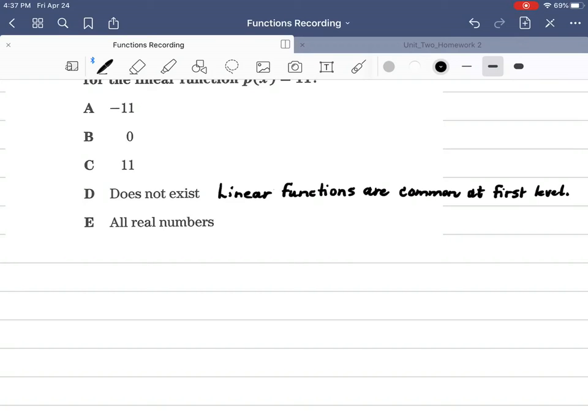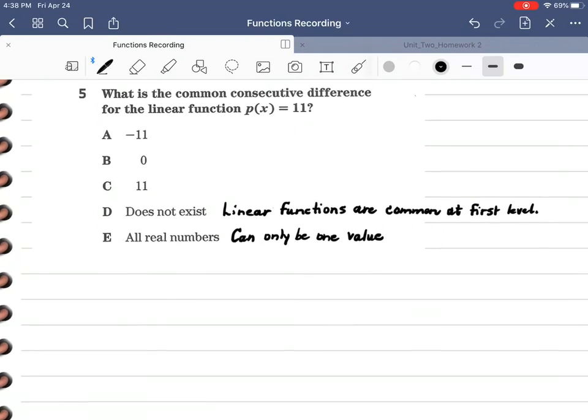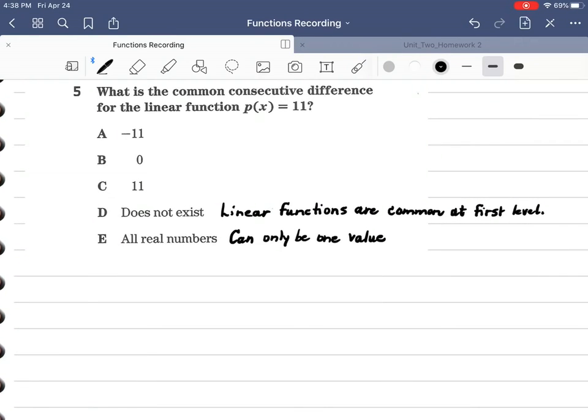All real numbers, that means that it wouldn't be a common difference. It can only be one value and be common. As soon as I use more than one value we lose commonality. So those two are not options just based on theory. So it has to be A, B, or C.